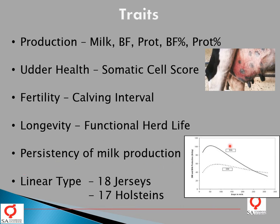Then there is persistency in milk production, which deals with the slope especially in the last two-thirds of the lactation curve. You can have a high peak in lactation, but if you have a very steep decline in production, the area under the lactation curve gives you total milk production — meaning a sharp decline after peak production results in lower milk production in the latter two-thirds of the lactation. Very important in recent years are so-called linear type traits. In South African populations, there are 18 Jersey linear type traits, also called functional type traits, dealing with walkability, stayability, and functional herd life.